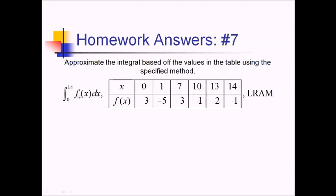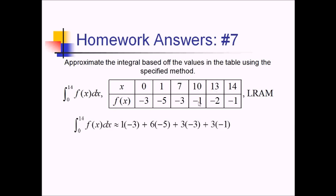For this problem, we want to approximate the integral from 0 to 14 of f, which is given in this table of selected values, and we're using LRAM. So for each rectangle we're going to pick the left endpoint for the y value. The integral is approximately equal to a base of 1 times a height of negative 3, then base of 6 times negative 5, because that is the left y value choice. Next we've got base of 3 times a height of negative 3, another base of 3 times a height of negative 1, and then a base of 1 times a height of negative 2. Adding these up: negative 3 plus negative 30, so that's negative 33, that becomes negative 42, negative 45, negative 47.